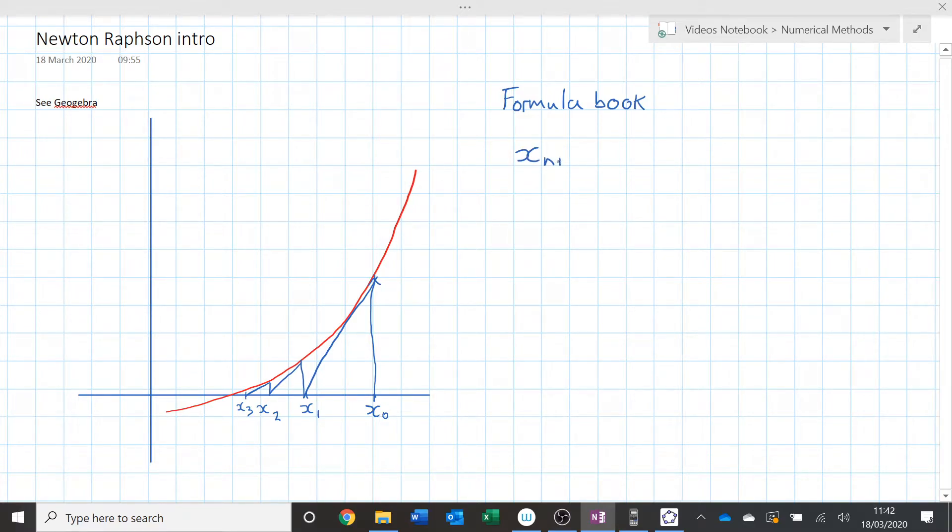The iterative formula is this: xn+1 is equal to xn minus f of xn divided by f dash of xn. Looks a bit like some stuff going on in here. It reminds you a little bit of some of your equations of straight lines that you might have found, like y minus y1 equals that kind of thing. It is because it all kind of comes from that kind of working.